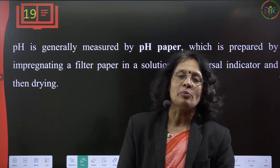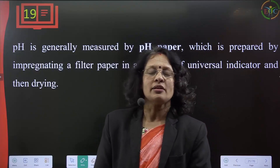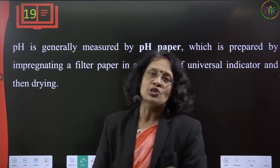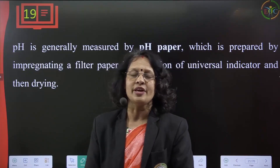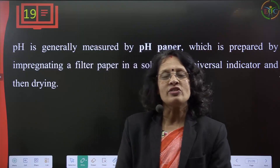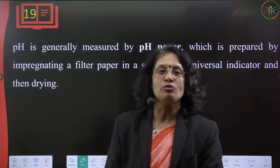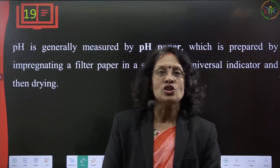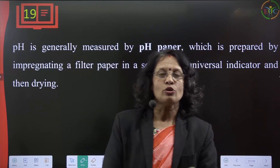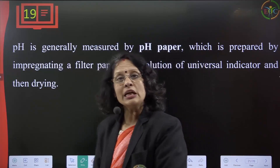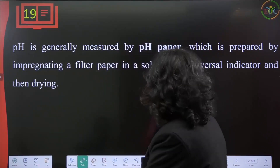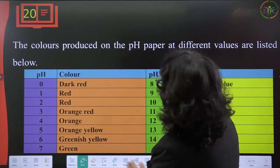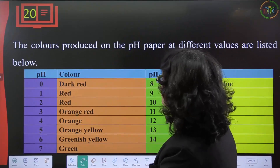For example, if you dip pH paper in lemon juice and the color changes to orange, it means the pH is acidic. If you dip it in detergent water and the color changes to violet or blue, it means the solution is strongly alkaline.